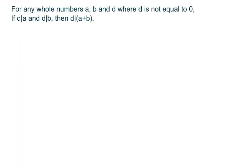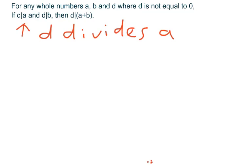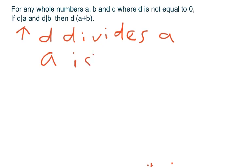It says that for any whole numbers a, b, and d, where d is not equal to zero, if d|a and d|b, then d|(a+b). Oh, what does that mean? And d, also the same thing with b, what does that mean? Hmm, we better stop for a minute. So the symbol that you're seeing right here means that d divides a.